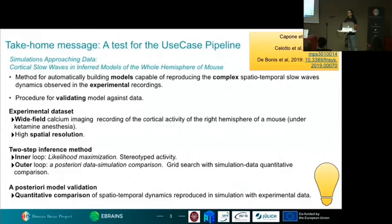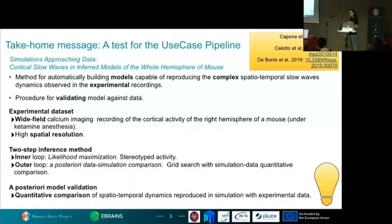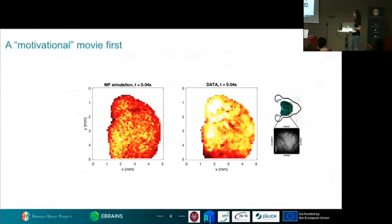Finally, we also need a posterior model validation. We are using some features from the experimental dataset in order to fit our model, but we also want to be sure that we are not just overfitting those observables — but that we are actually capable to reproduce the spatial temporal dynamics of waves.